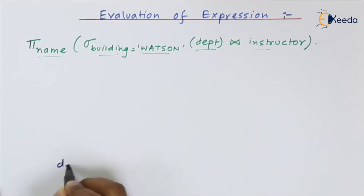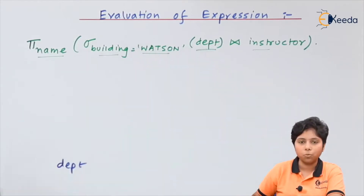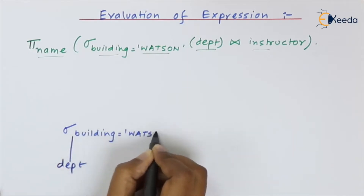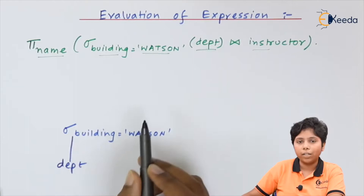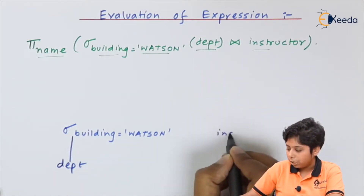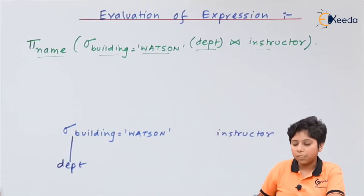Now, how to apply materialization to this query: first we have the department relation, and from it we select where building equals Watson. After fetching all tuples where building is Watson from the department relation, we join that result with the instructor relation. So we are joining only the tuples from department where building equals Watson with the instructor relation.